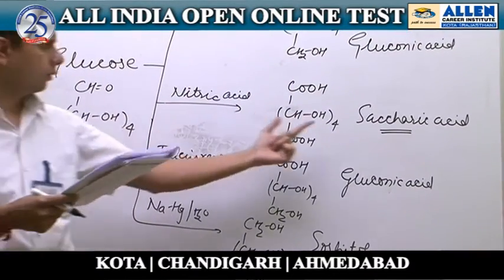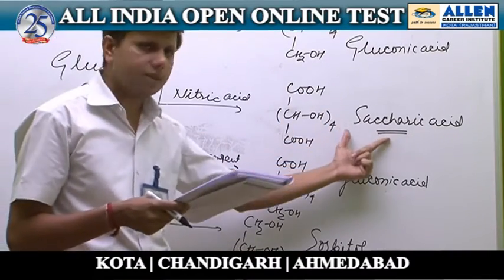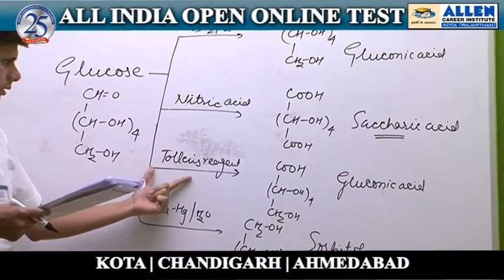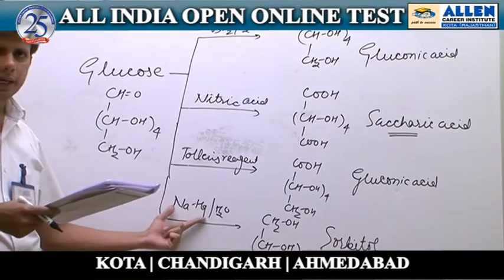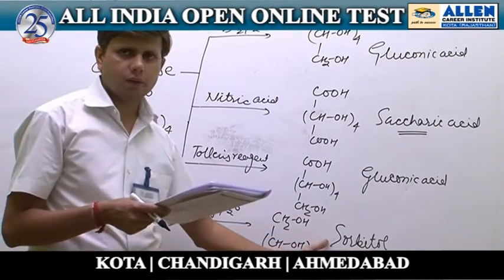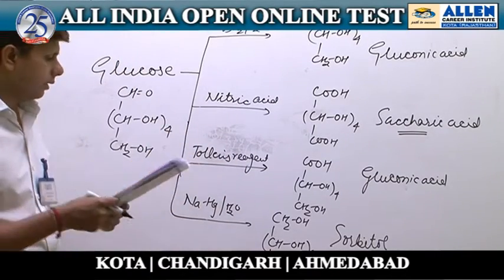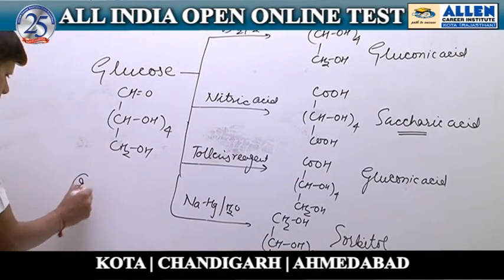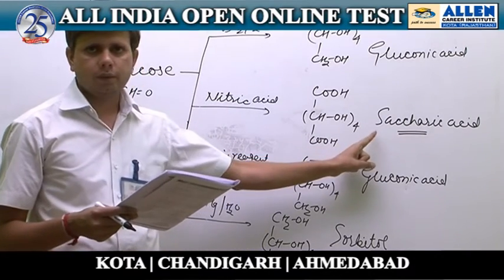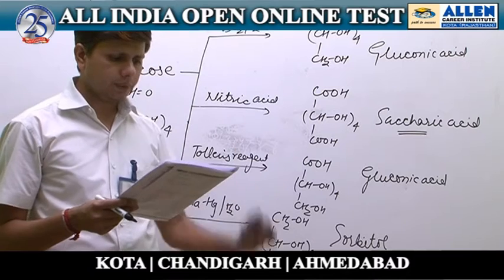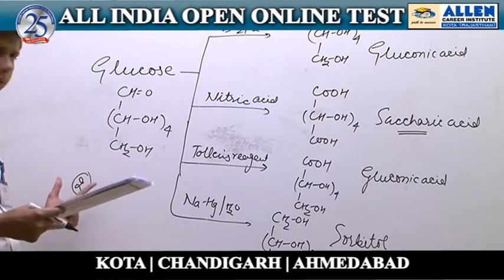Nitric acid does not give gluconic acid; it gives saccharic acid. Tollens reagent gives gluconic acid — correct. Reaction with NaHg in water gives sorbitol — correct. The question asks which is incorrect, so the correct answer is the second option, because the product is saccharic acid, not gluconic acid as stated.